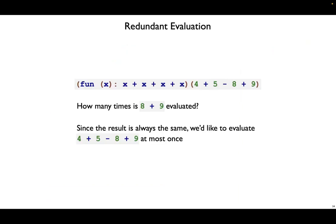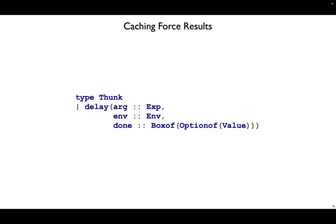Since these results are always the same, we'd like to make sure that we evaluate expressions like this one at most once and never again. To do that, we need to change our environment structure. We need to equip our thunks with a cache once they know that the expression has been evaluated once they no longer evaluate it in the future. We'll do that by adding one more field.